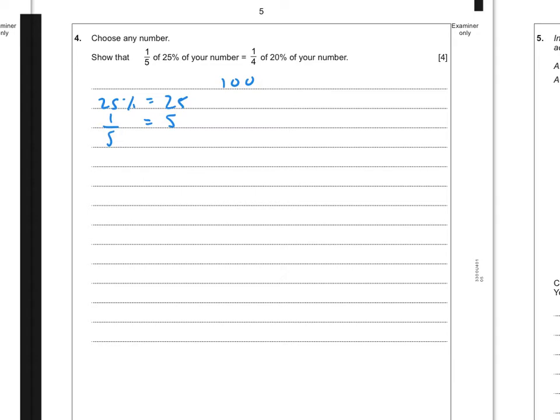And now if we look at finding 20% of it, so 20% of 100 is 20. And then one-quarter of 20 is 5.